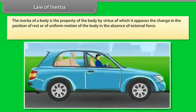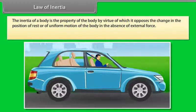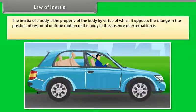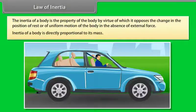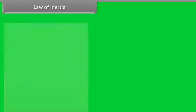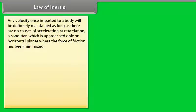Law of Inertia: The inertia of a body is the property of the body by virtue of which it opposes the change in the position of rest or of uniform motion of the body in the absence of external force. Inertia of a body is directly proportional to its mass.